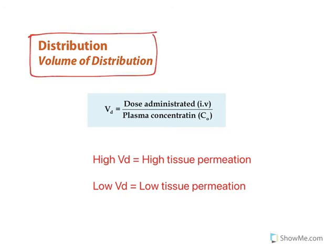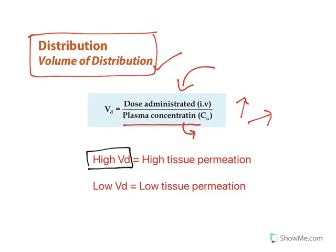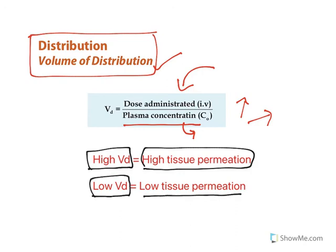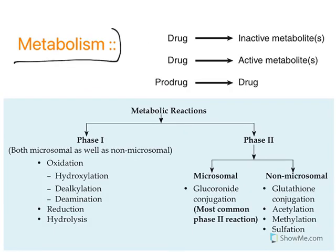An important concept in drug distribution is volume of distribution (Vd), given by the dose administered divided by plasma concentration. A high volume of distribution means low plasma concentration — the drug has gone into tissues. If a drug has a high volume of distribution it penetrates well into tissues; if it has a low volume of distribution there is low tissue penetration.